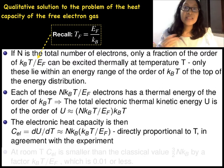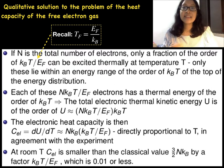We see that this is directly proportional to temperature in agreement with the experiment. At room temperature, the heat capacity is smaller than the classical value of 3/2 NkB by a factor of 0.01 or less for TF approximately 50,000 Kelvin.